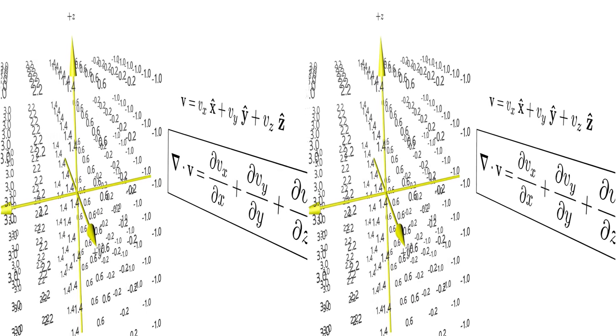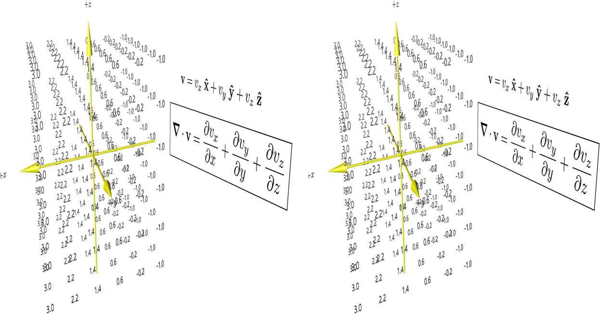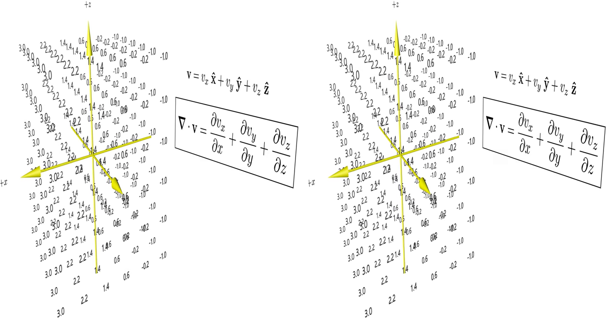Note that you have lost any directionality that was in the initial vector field. It is impossible to go back from the scalar field to the vector field.